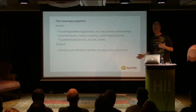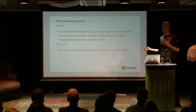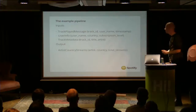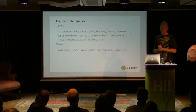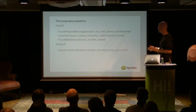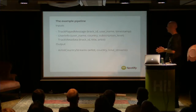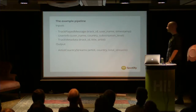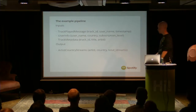Here's the example pipeline I'll be demonstrating all the different tools with. It's a pretend Spotify scenario: you've got a track-played message with track ID, username, and timestamp. You have user info: username, country, subscription level. You have track metadata: title and artist. And what we want to output is 'artist country streams' — the number of streams by an artist in a country for whatever date range you give the input data for.